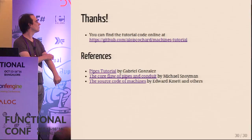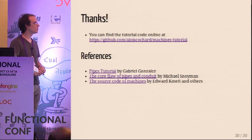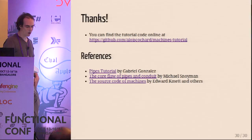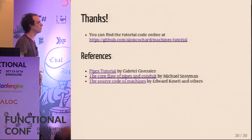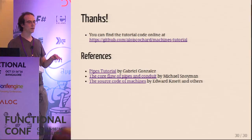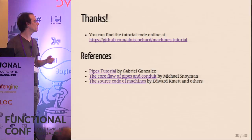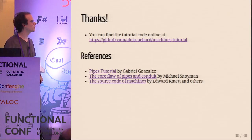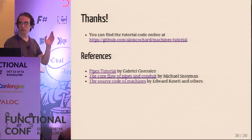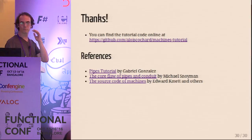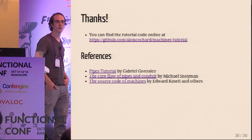That's it. You can find all the code online. A few references: the pipes tutorial by Gabriel Gonzalez explains a lot about how pipes was designed and the reasoning behind design choices. There's a blog post from Michael Snoyman describing the differences between pipes and conduit. And obviously the machines documentation itself, which shows some great stuff. I hope that gives you an intuition about what you can do with this library.